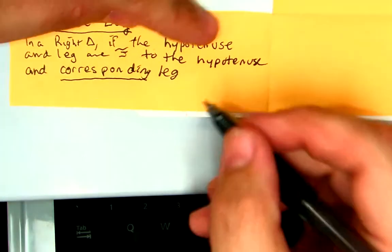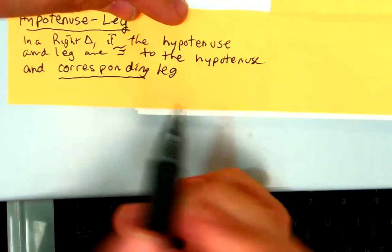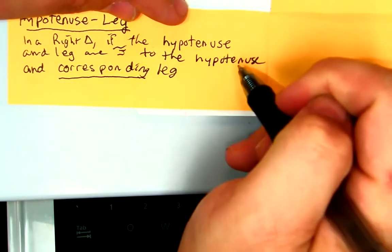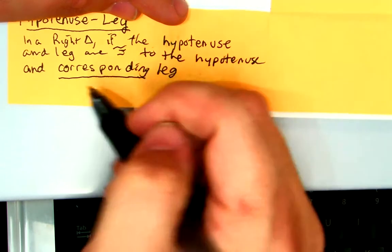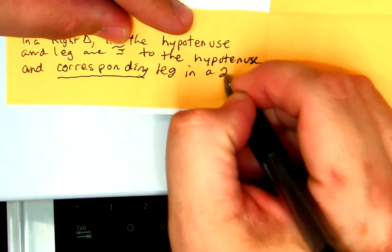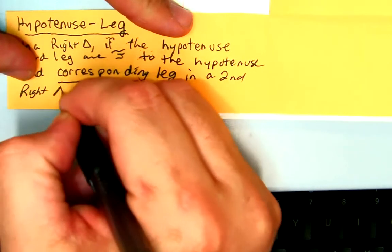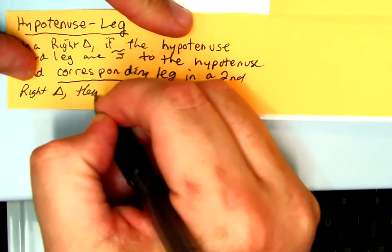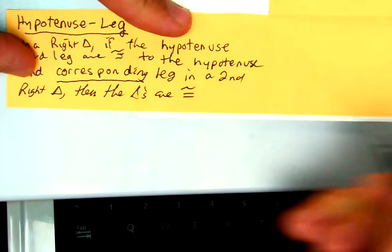So you have to make sure. If the hypotenuse and leg in one are congruent to the hypotenuse, the hypotenuse is always corresponding to the hypotenuse because it's the largest side in the right triangle, and the corresponding leg in a second right triangle, then the triangles are congruent.